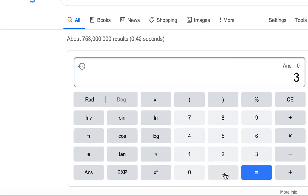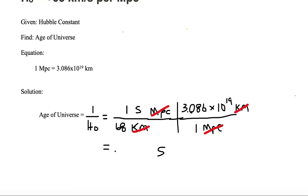So it's 3.086 EE19 divided by 68. And we have a value of 4.54 times 10 to the 17th. So we have 4.54 times 10 to the 17th seconds.